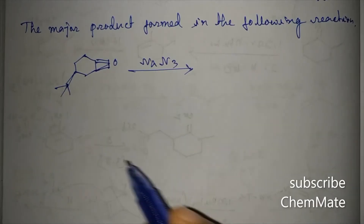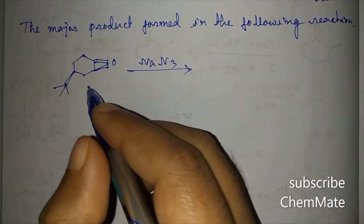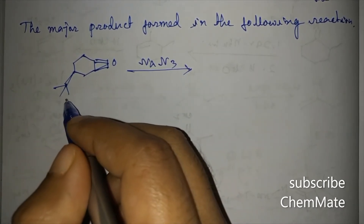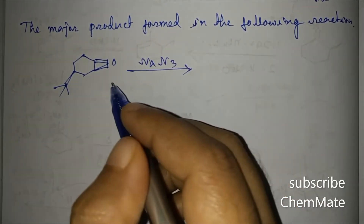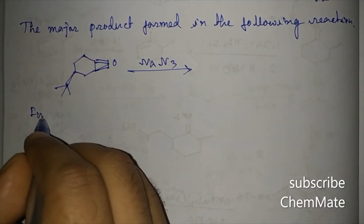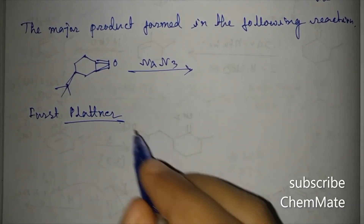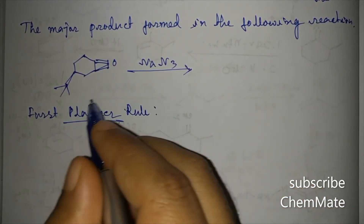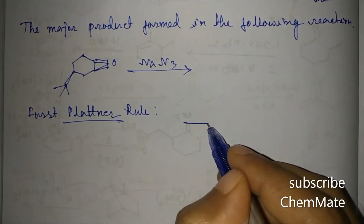The next question asks for the major product of a reaction involving a cyclohexane epoxide with a tertiary butyl group, treated with NaN3. This is an epoxide ring-opening reaction and it will follow the first Platinum rule.